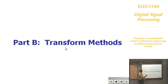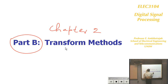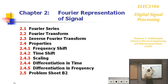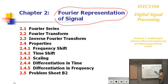We are on Part B, Chapter 2 of our transform methods. This chapter deals with Fourier transform in the analog domain. I'm going to concentrate on Fourier representation of the signal. I will cover four basic Fourier systems, which you may have already done under math. Then I'll do Fourier transform and inverse Fourier transform — these are for continuous time signals, not digital signals.